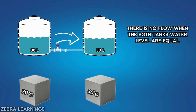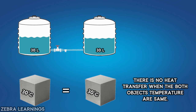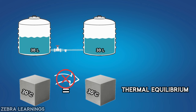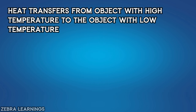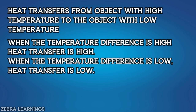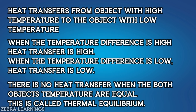Water will flow from one tank to the other until the water level in both tanks is equal. Once both tanks are equal, there will be no more water flow. Similarly, heat transfer will occur between the two objects until their temperatures are equal. Once both are equal, there will be no more heat transfer. Heat transfer occurs from an object with a high temperature to one with a low temperature. When the temperature difference is low, the heat transfer rate is also low. Once the temperatures of both objects are equal, there is no heat transfer — this is called thermal equilibrium.